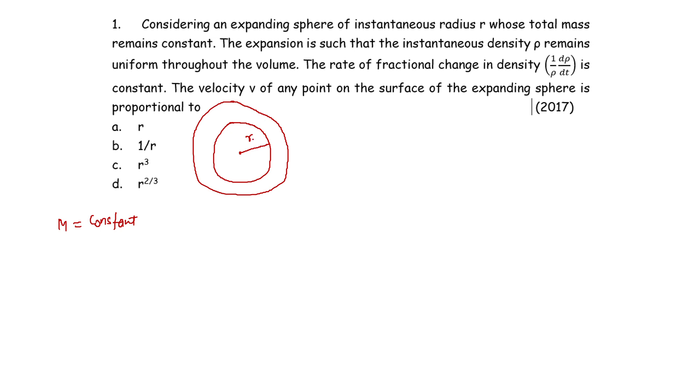The rate of fractional change of density, that is 1 by ρ dρ by dt, is again constant. This is given in the question. Now we have to find out the velocity of any point on the surface of the expanding sphere and it is proportional to what. That is what we have to tell. To know the velocity of any point on the surface of the expanding sphere,